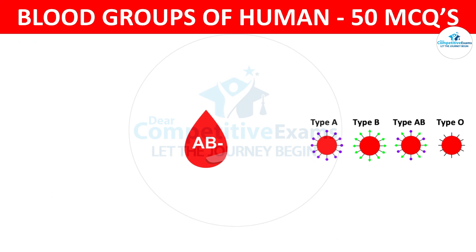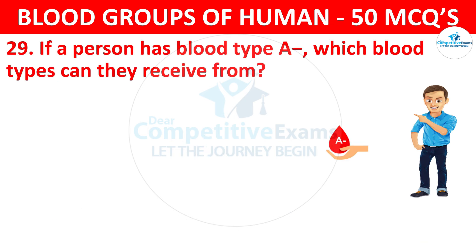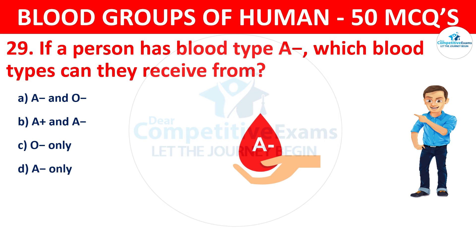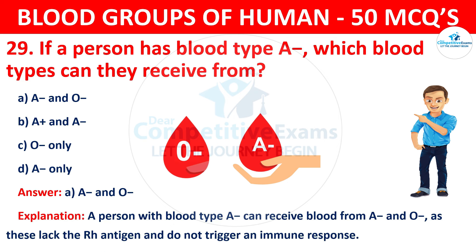Question 29: If a person has blood type A negative, which blood types can they receive from? The correct answer is A, A negative and O negative. A person with blood type A negative can receive blood from A negative and O negative, as these lack the RH antigen and do not trigger an immune response.